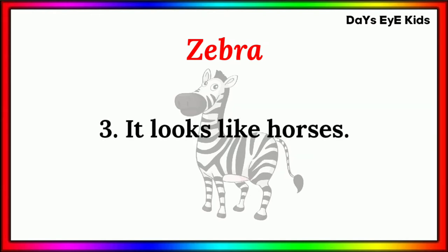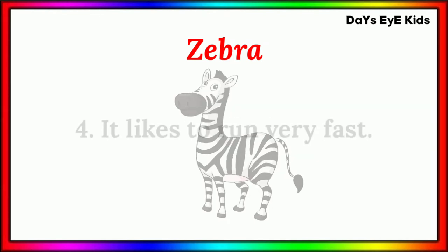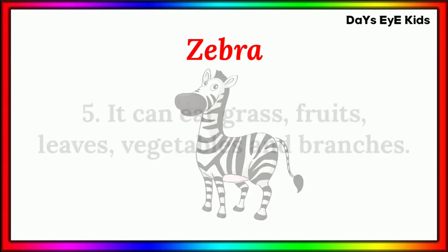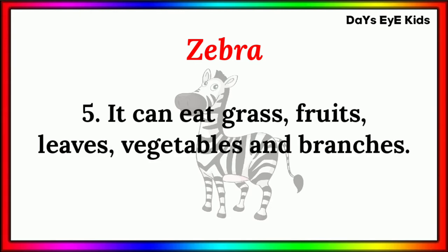It looks like horses. It likes to run very fast. It can eat grass, fruits, leaves, vegetables and branches.